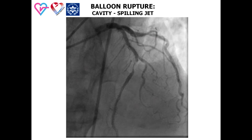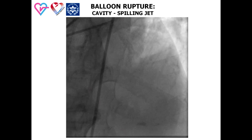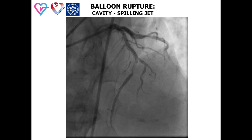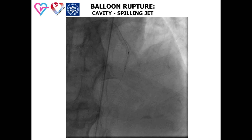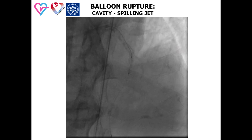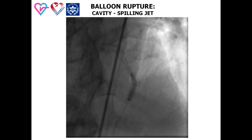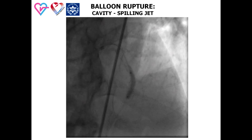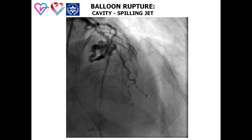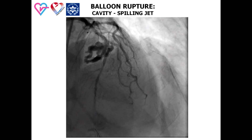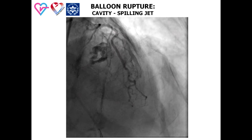This angio demonstrated significant stenosis of a severely calcified segment of the LAD artery. The lesion was very resistant; predilatation with higher pressure balloons was performed several times. A cavity spilling perforation developed after balloon rupture and required implantation of a covered stent.